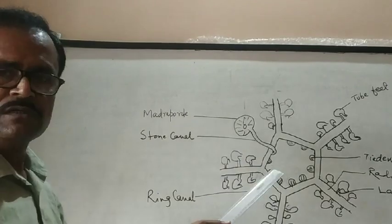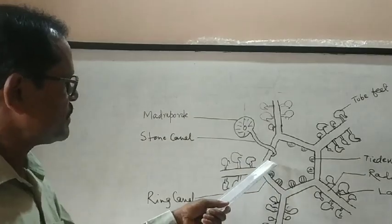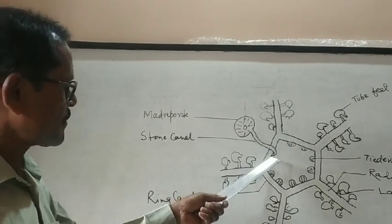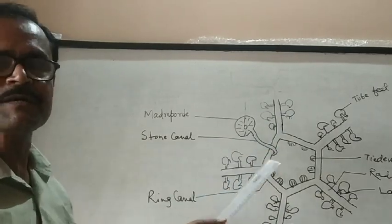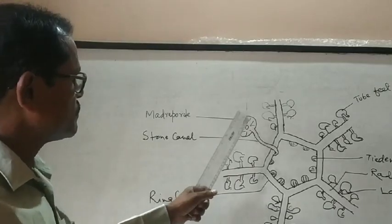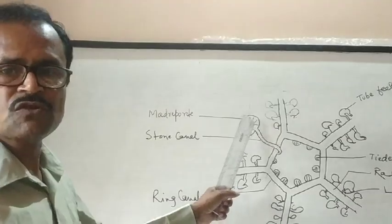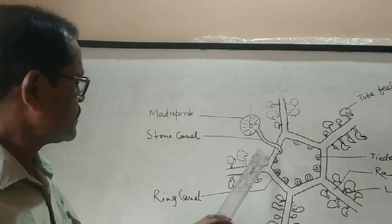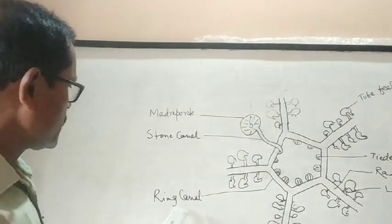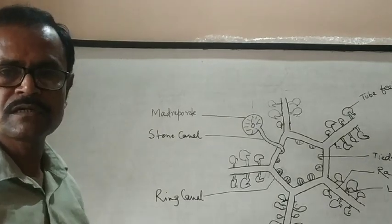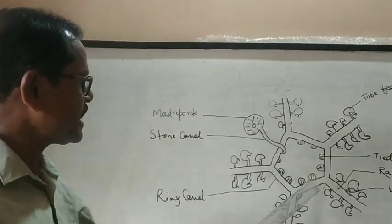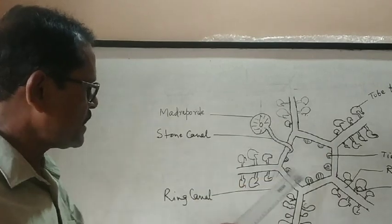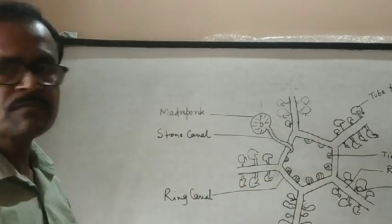The stone canal opens in one part of the ring canal in between the two arms, which are known as bivium. So, the entering fluid, coelomic fluid, water, marine water, passes through that canal and comes into ring canal. Ring canal is a characteristic canal. It is a pentagonal ring-like structure.